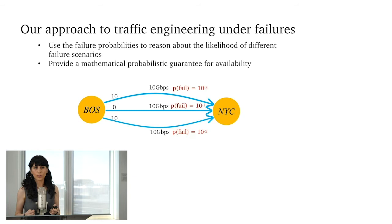So going back to our example, I'm going to add an extra bit of information. I'm going to tell you the failure probability of these three different links. So notice that the middle link has a slightly higher failure probability than the top and bottom link. So very simple. What I'm going to do is that I'm going to allocate zero traffic to that middle link because its failure probability is pretty high. So I don't even want to carry any traffic on it. What this means is that I end up carrying 20 gigabits per second of traffic across this network most of the time, 99.8% of the time.